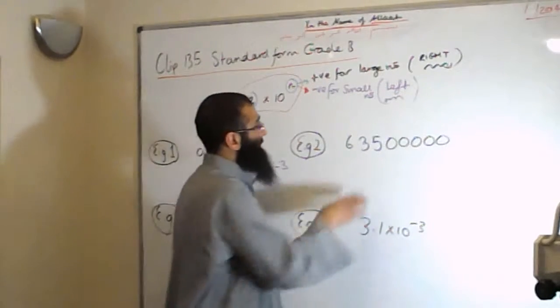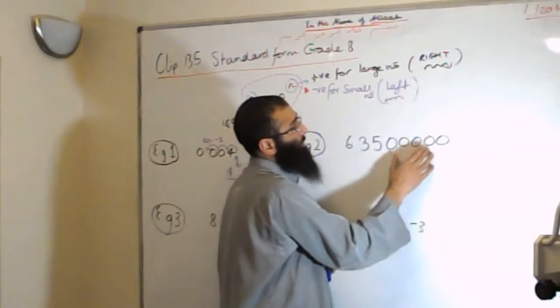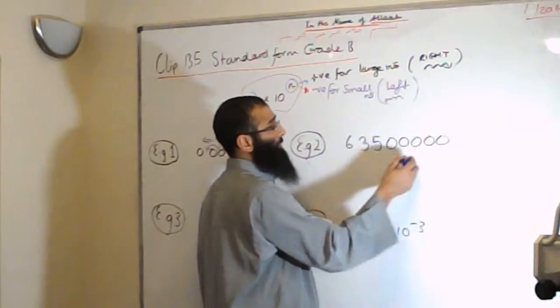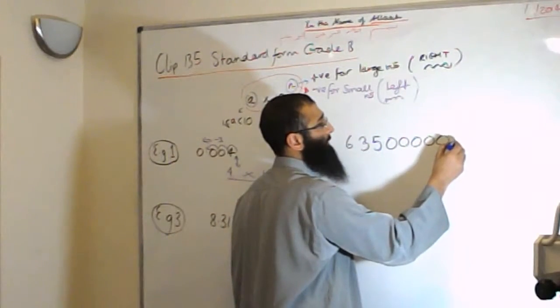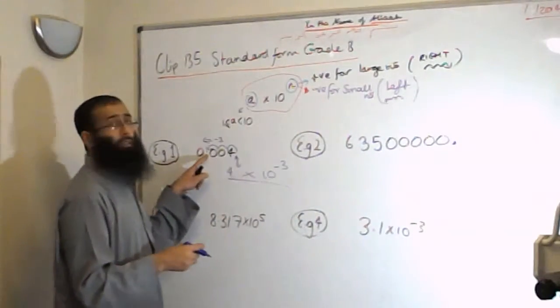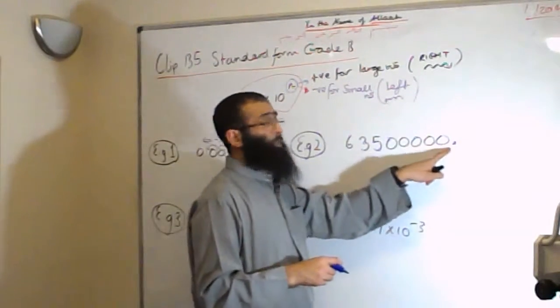Example number 2. 6, then we have 6, 3, 5, 0, 0, 0, 0, 0, 0. As we see here, the decimal point is currently at the end of the number. In this particular question, the decimal point was there. In a whole number, the decimal point is always at the end.